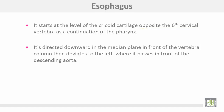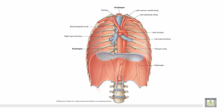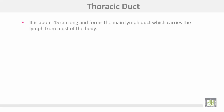The esophagus starts at the level of the cricoid cartilage in the root of the neck, opposite the 6th cervical vertebra, as a continuation of the pharynx. It is directed downwards in the median plane in front of the vertebral column, then deviates to the left where it passes in front of the descending aorta. Opposite the 8th thoracic vertebra, it enters the abdomen by piercing the right crus of the diaphragm to end in the cardiac end of the stomach. The figure shows the descending aorta on the left and the esophagus entering the abdomen through the esophageal opening of the diaphragm.